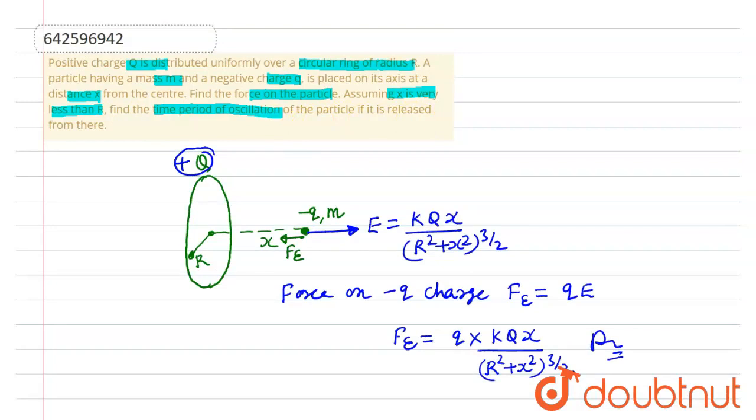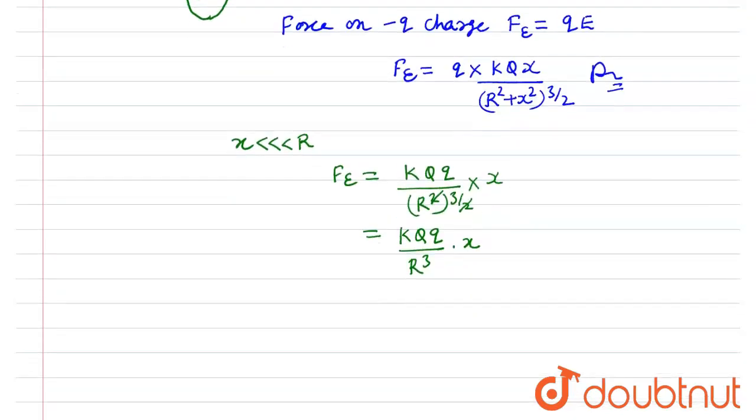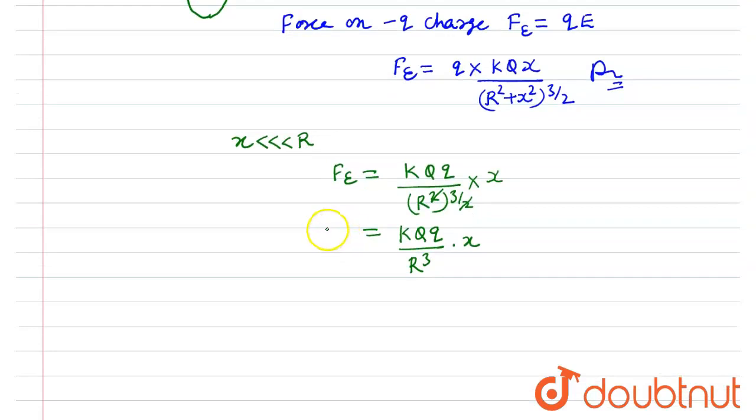For time period of oscillation, we have x is very very less than R. Then F electrostatic will be equal to kQq upon (R²)^(3/2) multiply by x. The squares cancel each other. So this will be equal to kQq upon R³ into x, and electrostatic force can be written as mass into acceleration.